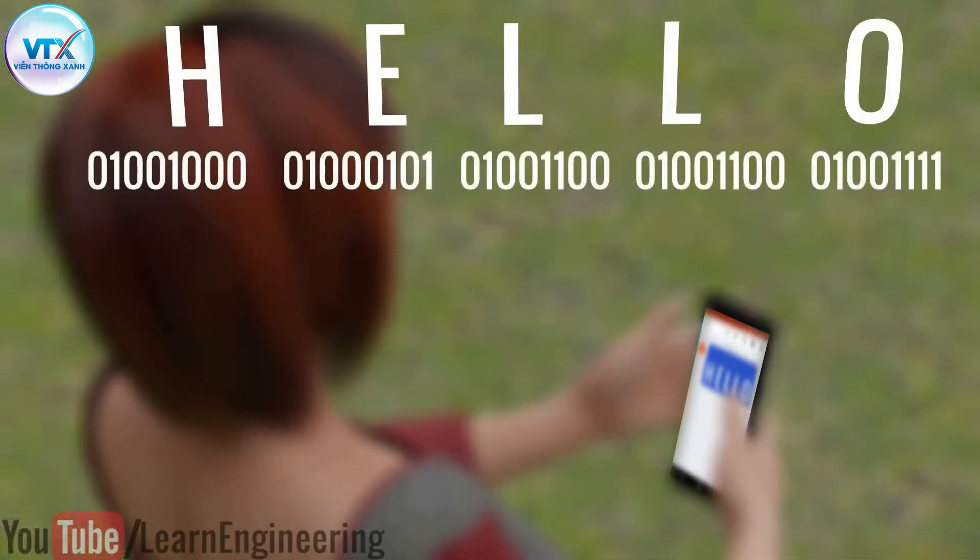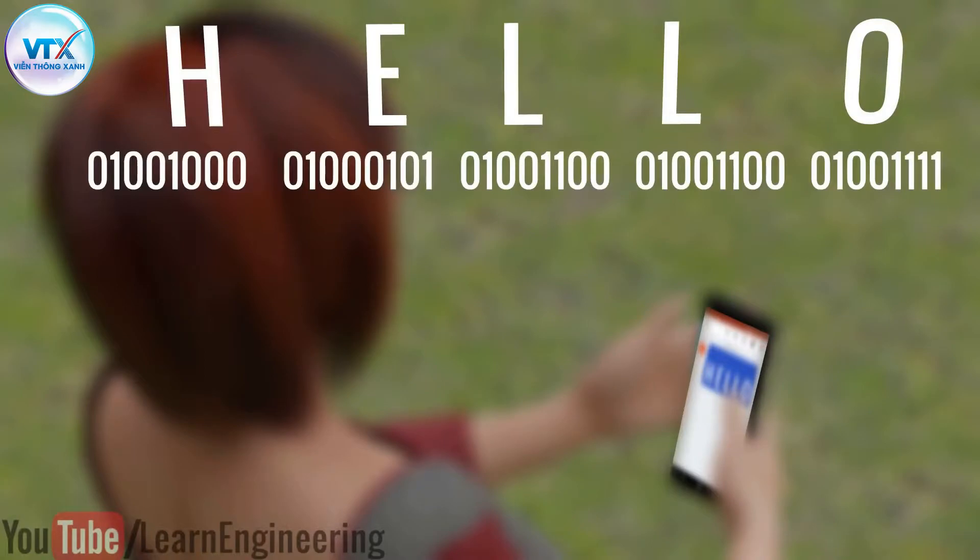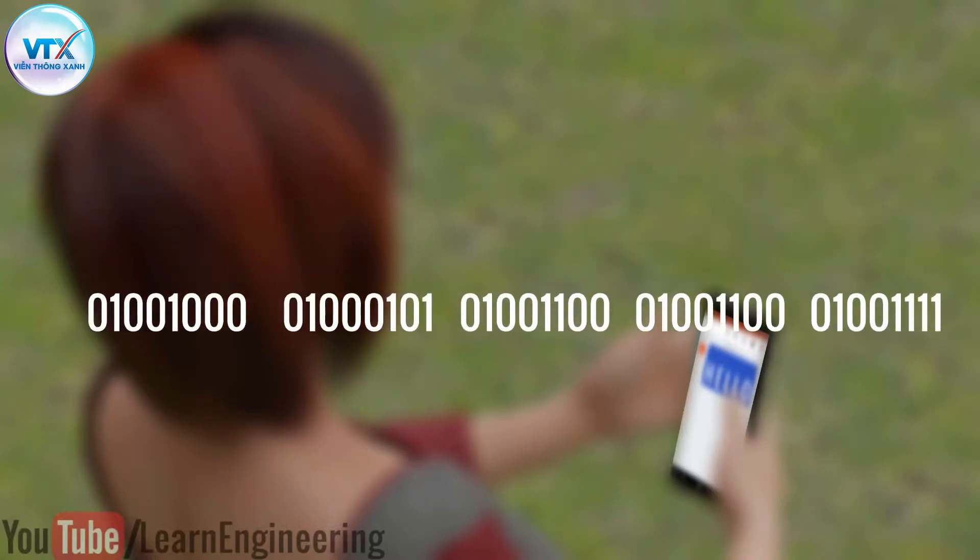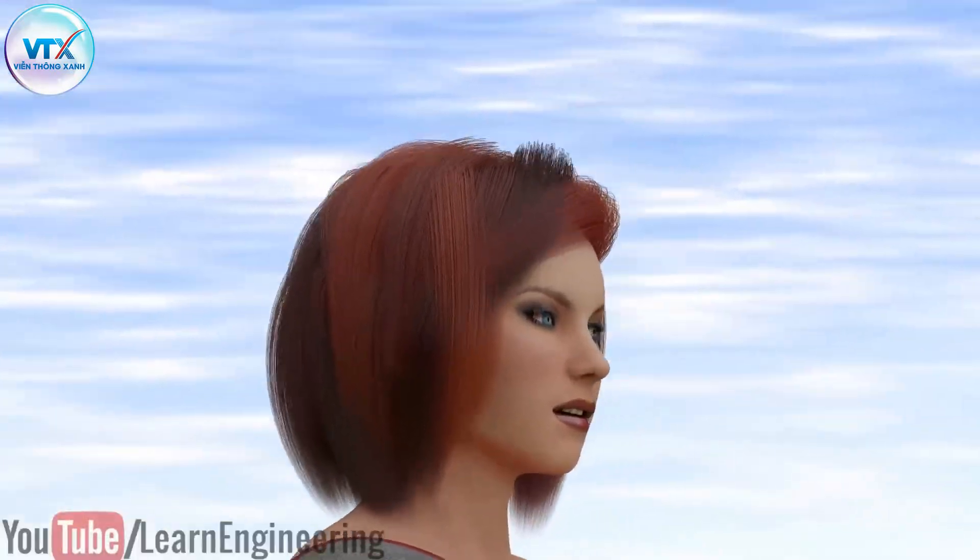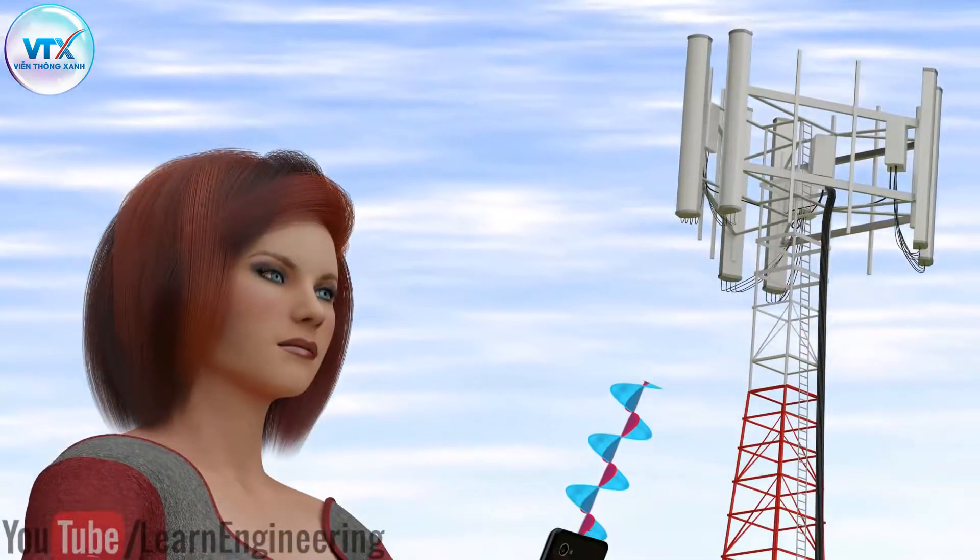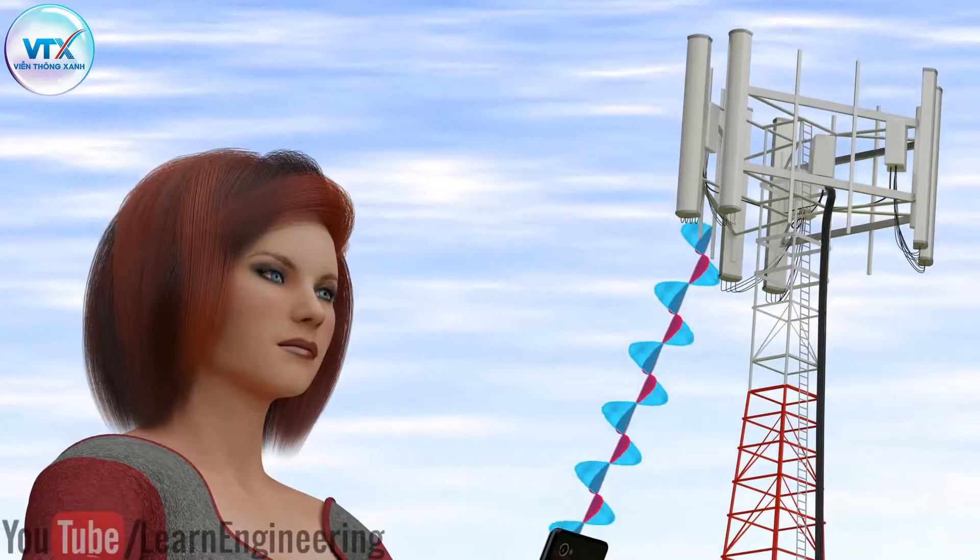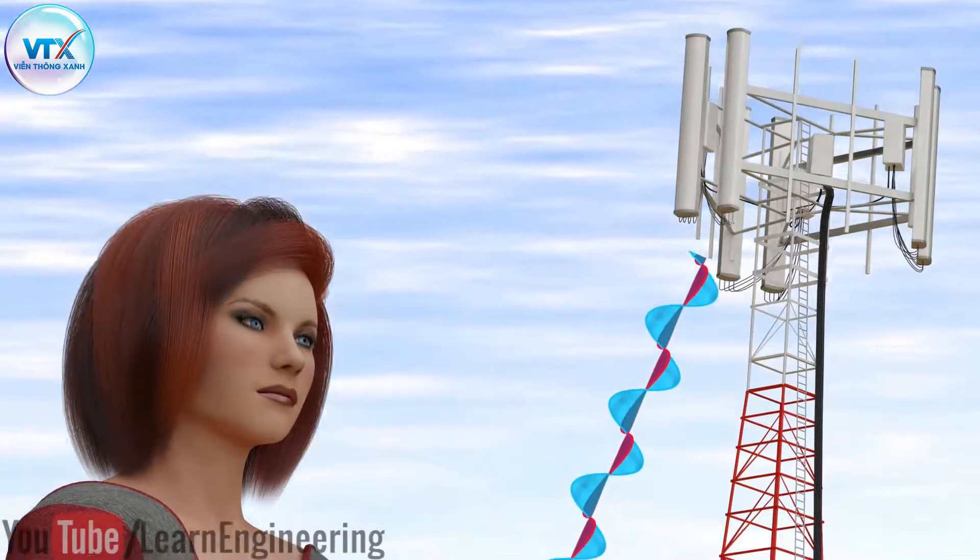First, this word will be converted into an equivalent binary code as a sequence of zeros and ones. After the conversion, your mobile phone will transmit these zeros and ones in the form of electromagnetic waves. One is transmitted as a high frequency and zero as a low frequency wave.